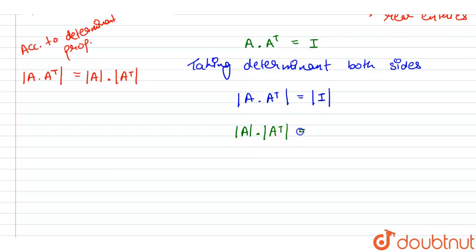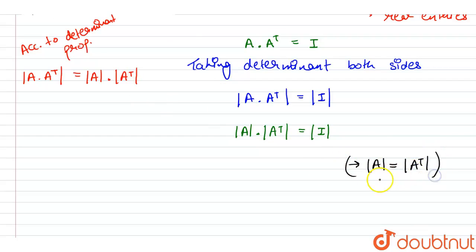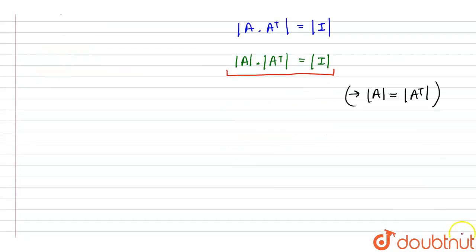We also know that for an orthogonal matrix, the determinant of A equals the determinant of A transpose — changing rows and columns gives the same determinant value. So we can write this as determinant of A transpose multiplied by determinant of A transpose.